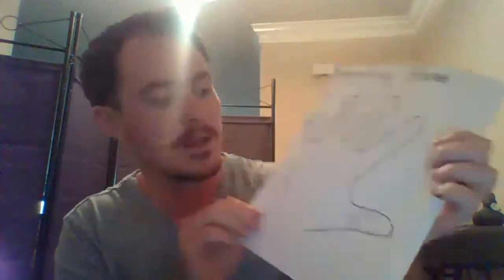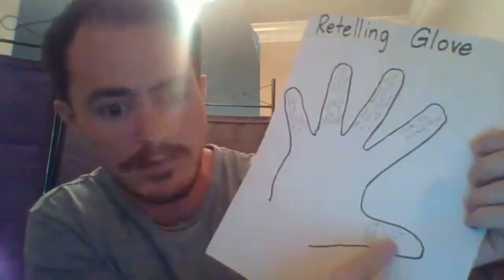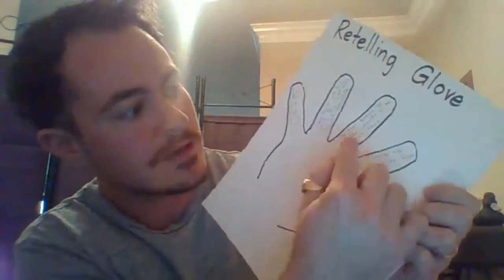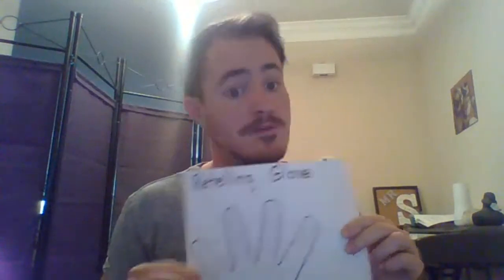So your job today is to find a book on Raz Kids, on Kids A to Z, and you are going to trace your hand on a piece of paper. Inside each finger, you're going to write a different element of the retelling glove — thumb for characters, then setting, conflict, resolution, and theme. Once you have all five things filled in, take a picture and post it to your portfolio. For extra credit, you can also make a video of yourself telling what happened in your story using all the elements from your retelling glove. All right. Bye, guys. Have a great day.